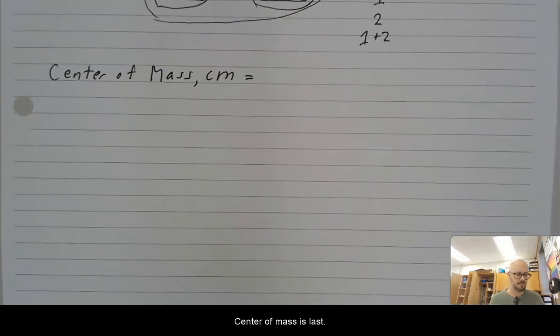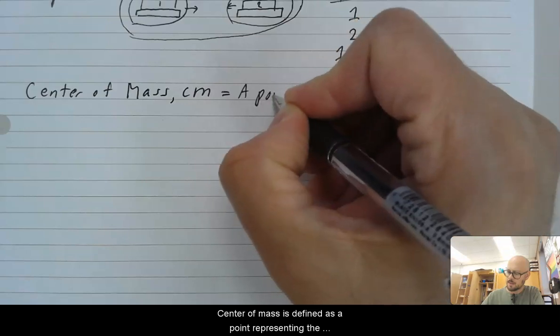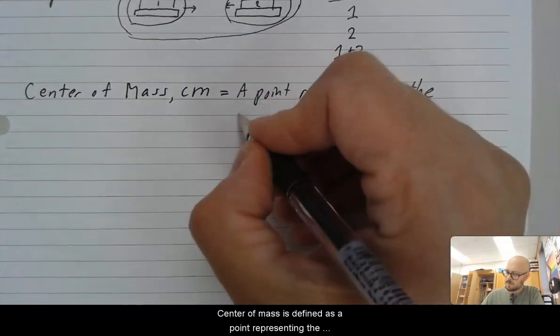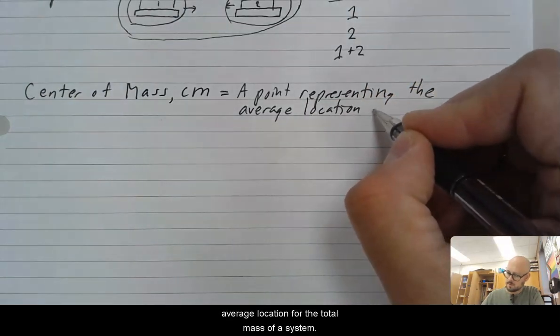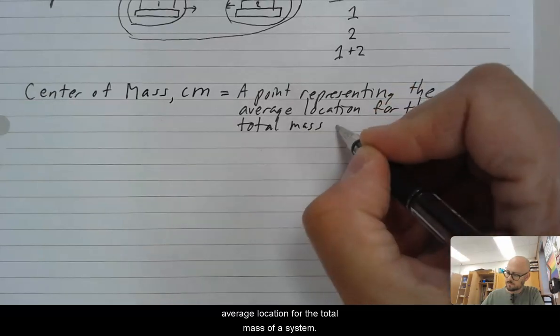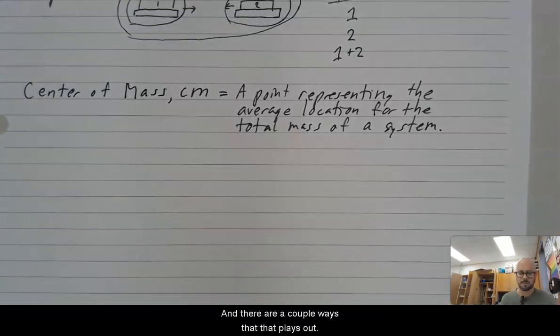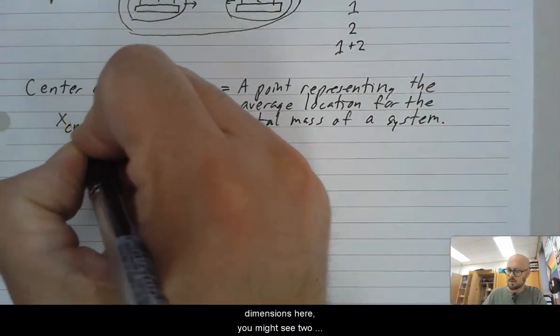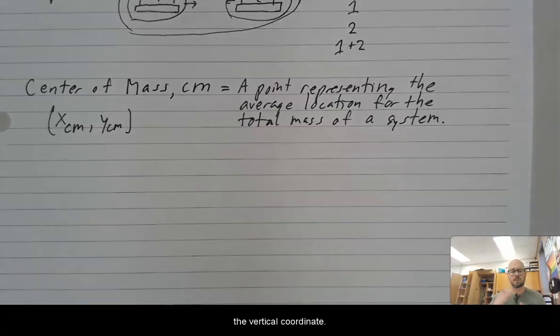Center of mass is last. And so this one's the most complicated because it has an equation. Center of mass is defined as a point representing the average location for the total mass of a system. And there are a couple ways that that plays out. So center of mass is abbreviated CM. And you would see, because we work in two dimensions here, you might see two coordinates for the center of mass. The x and the y coordinate. The horizontal coordinate and the vertical coordinate.